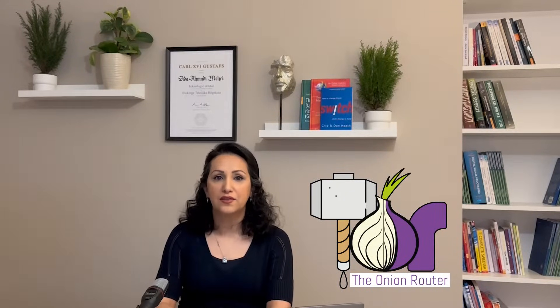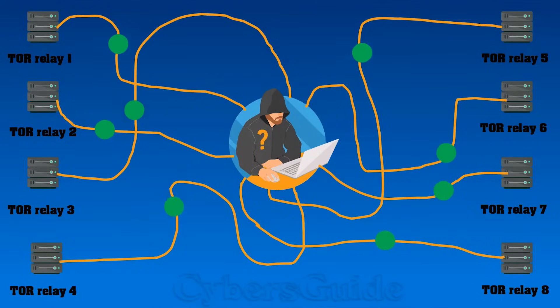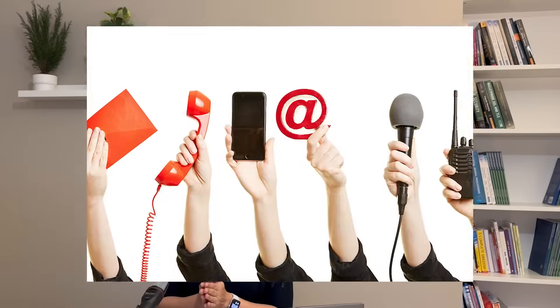The Tor Network, short for the Onion Router, is a decentralized network that allows users to browse the internet anonymously. It works by routing internet traffic through a series of volunteer-operated servers called Tor Relays or nodes. Your internet traffic is encrypted and routed through multiple relays, making it difficult to trace the origin of the communication. This process creates layers of encryption similar to the layers of an onion, hence the name the Onion Router.